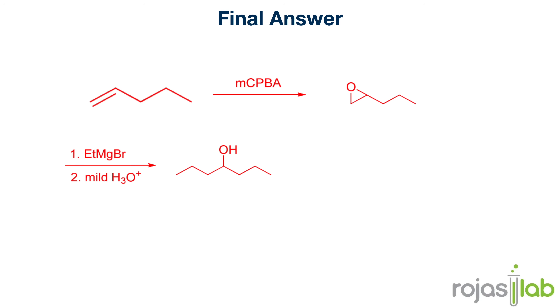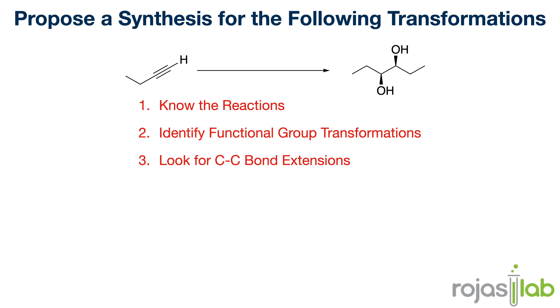This kicks up the oxygen to make our alcohol, which we need to do a substitution reaction. We can achieve this by first deprotonating the alcohol using sodium hydride, and then introducing ethyl bromide to give us our ether.